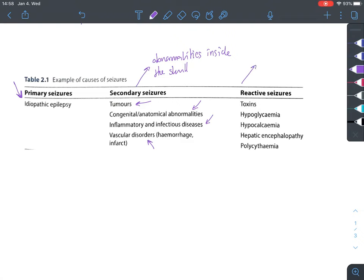Reactive seizures, on the other hand, are caused by metabolic or toxic causes. If we look at this, of course, we can have toxin ingestion, but also hypoglycemia, hypocalcemia, hepatic encephalopathy, and polycythemia, which could all lead to seizures.